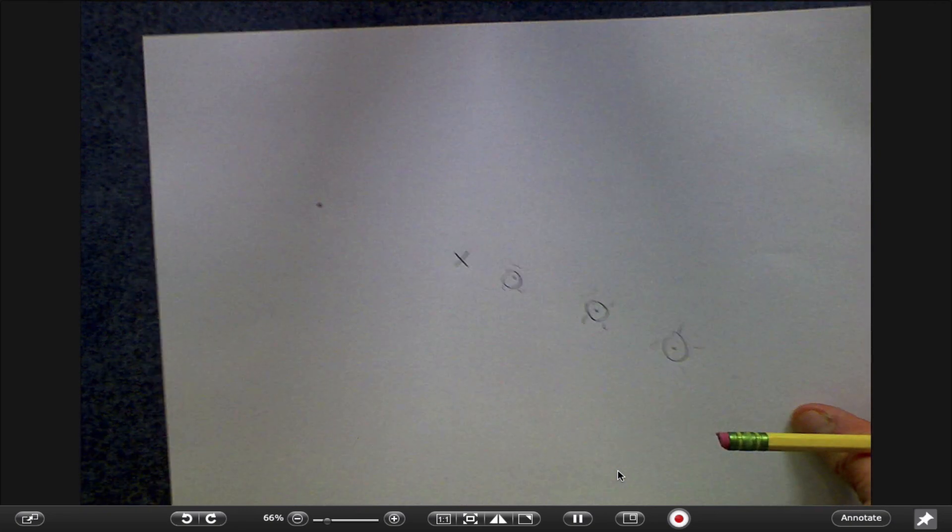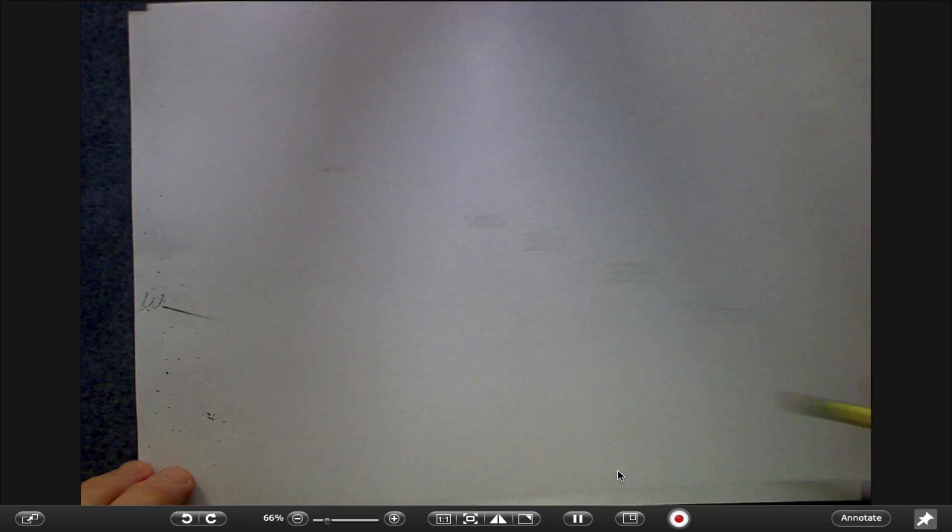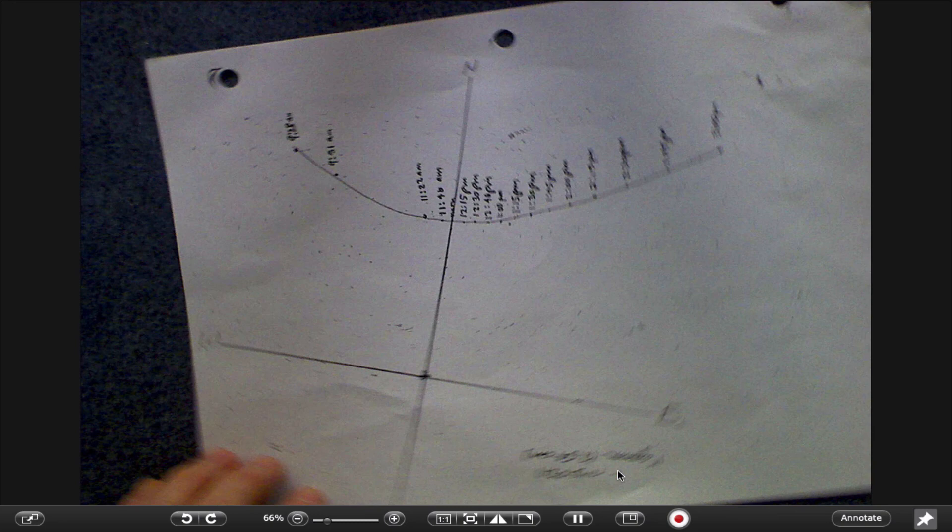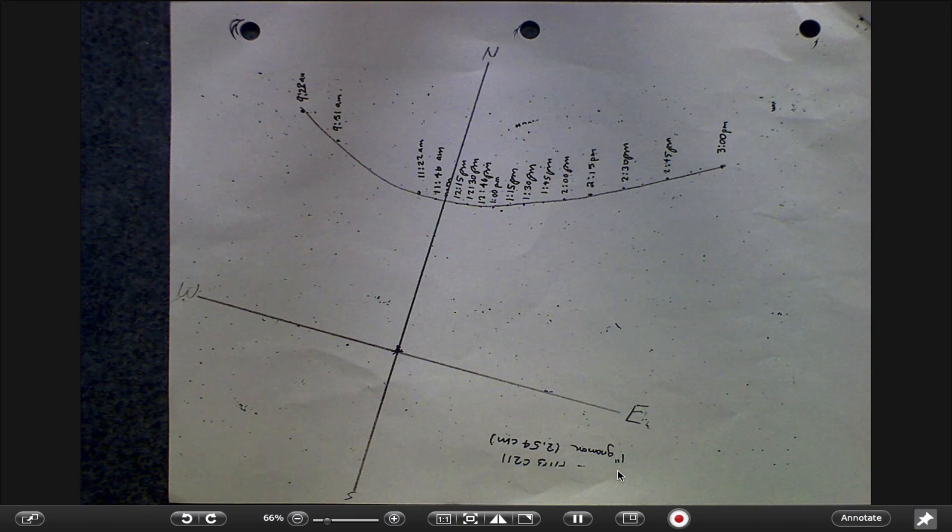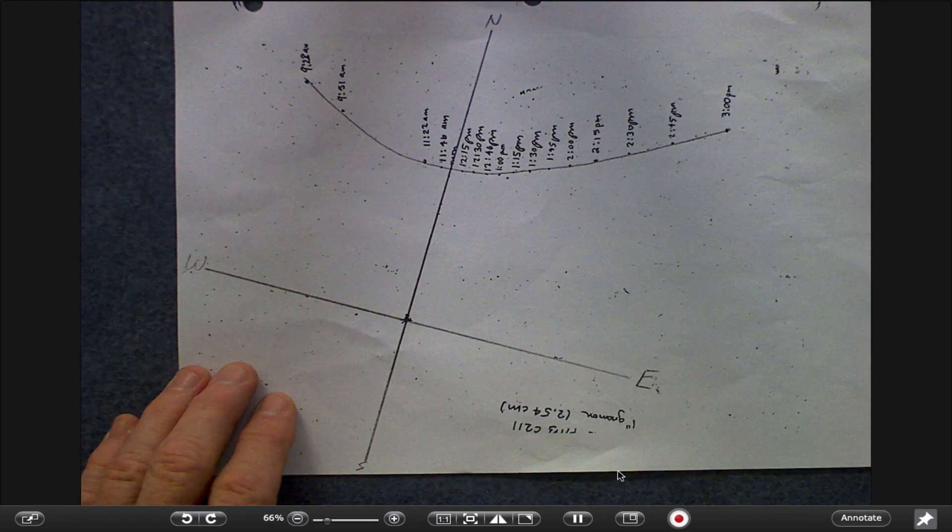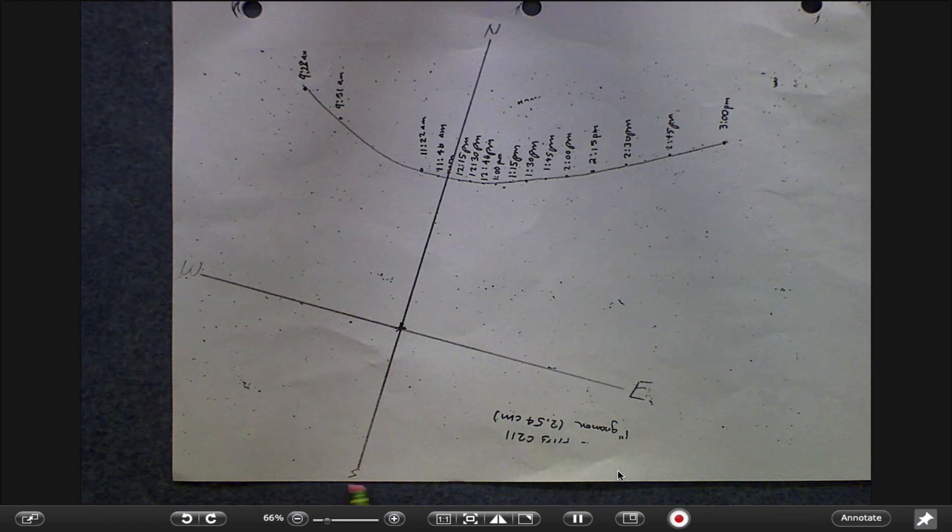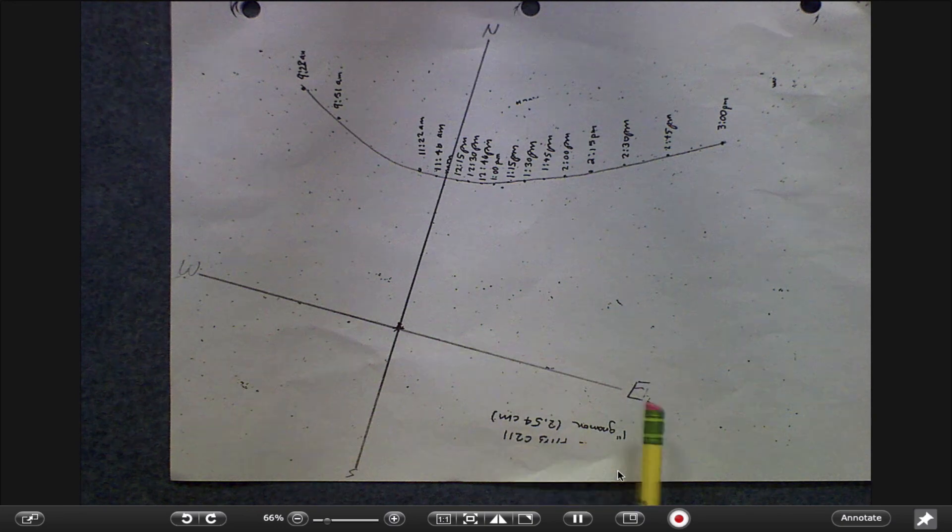Now I'm going to go to what we now know about shadow plots. Shadow plots, we found out that our local noon line always makes a pointer to true north, and once you know that it makes a pointer to true north, then we can get our south line in, our west line, and our east line.